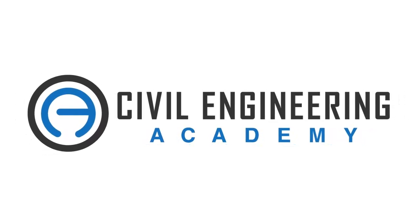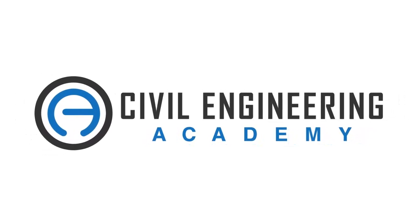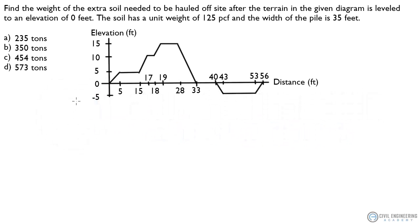Civil Engineering Academy. What's going on everybody? Let's go ahead and solve this problem. This is a good construction type of problem. The problem basically states: find the weight of the extra soil needed to be hauled off site after the terrain in the given diagram is leveled to an elevation of 0 feet.